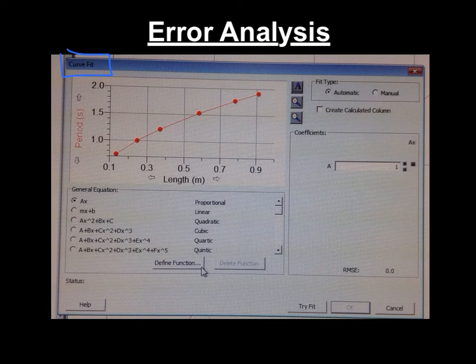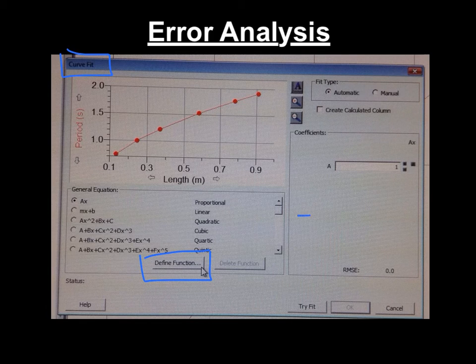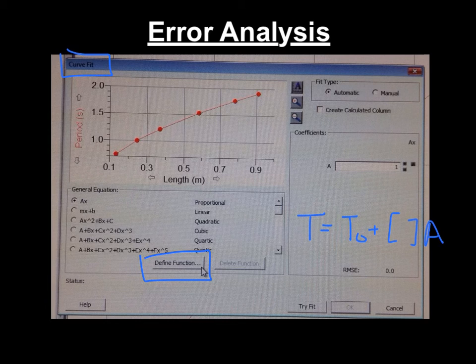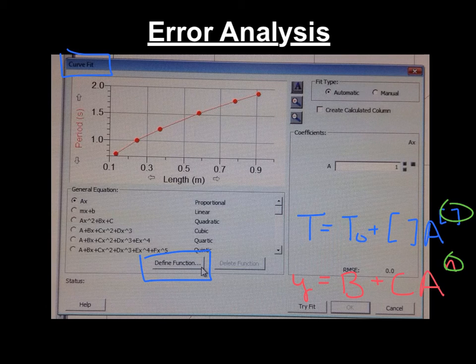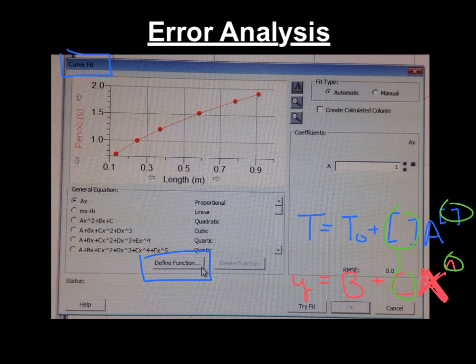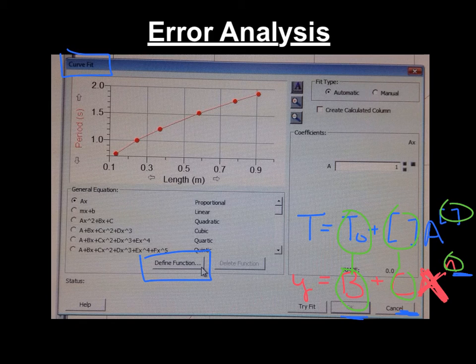So again, analyze, curve fit, define your function. And now we have T equals T0 plus some number times the amplitude to some power. So when we're defining our function this time, it's going to look like Y equals some constant B plus C times X to the N. And again, N lines up with N, C pairs with this constant, and T0, which is the period from the first part, pairs with B. You can use whatever letters you want for these pieces. Just make sure that you know what you're looking at.